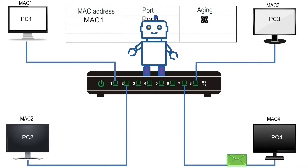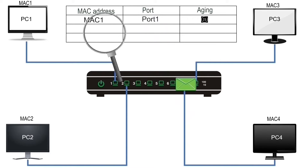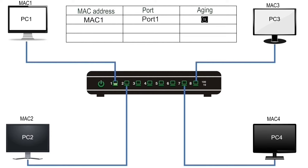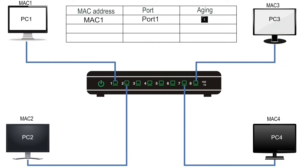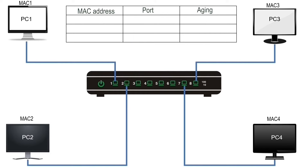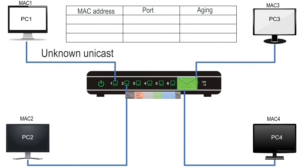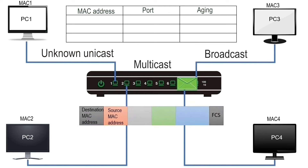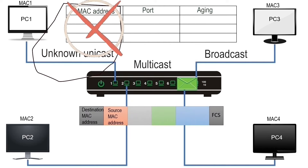A switch uses a relatively simple concept to forward a frame. It finds the destination MAC address of the incoming frame in the CAM table. If the CAM table has an entry for the destination MAC address, it forwards the frame from the port mentioned in the entry. If the CAM table does not have an entry, it forwards the frame from all ports except the port on which it arrived — a process called frame flooding.